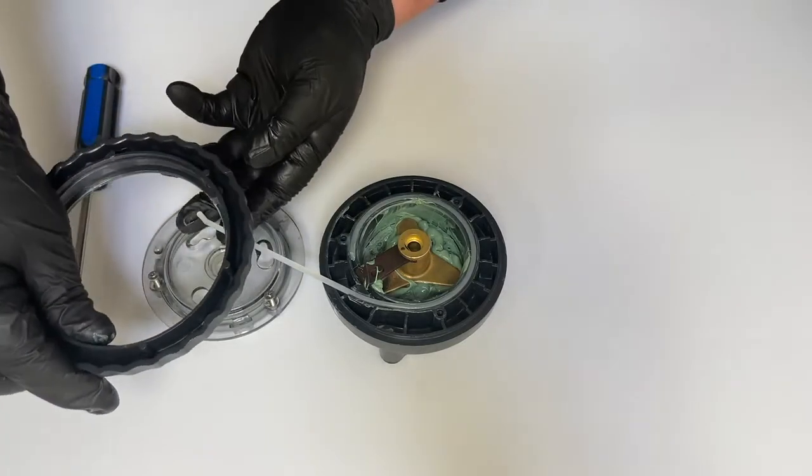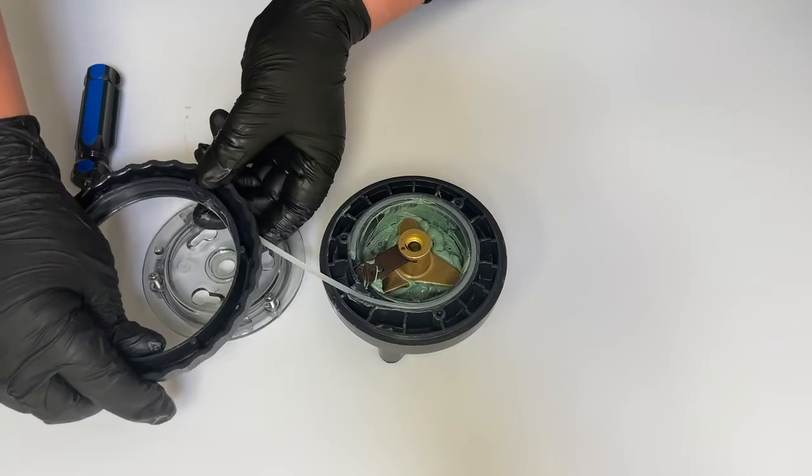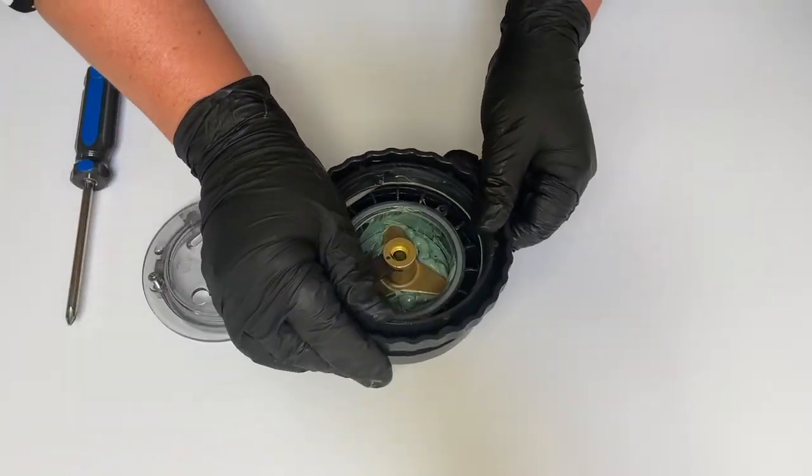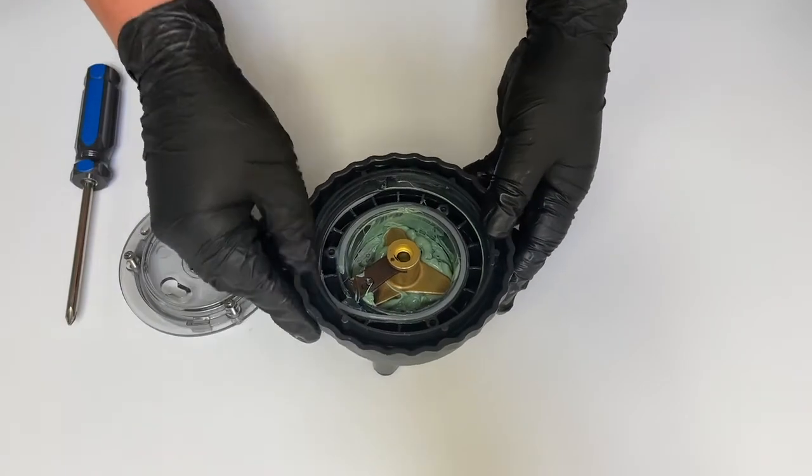Insert the elbow into the dial ring boss. Keeping the elbow in the boss, pivot the dial ring to gently place onto the feed rate base.